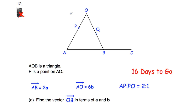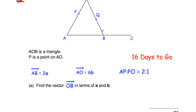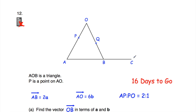Question number twelve is a vectors question. For part A, we've been asked to find the vector OB. Since we know vector AO and vector AB, go from O to A and then A to B to find vector OB. For part B, Q is the midpoint of one segment and B is the midpoint of another, and we've been asked to show that PQC is a straight line. Find vector PQ and vector QC, show they are multiples of each other — that means they're parallel. Since both pass through point Q, they must be in a straight line. We covered this type of problem 16 days ago.